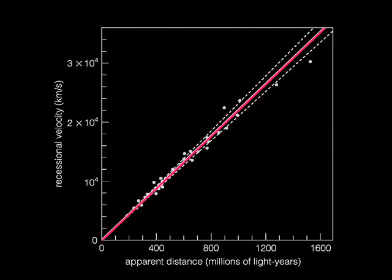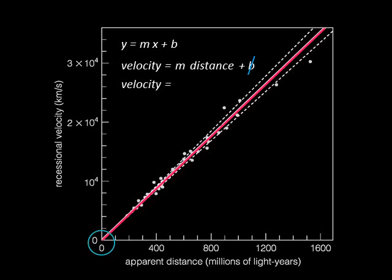This is a newer plot of velocity versus distance. Basically, we have a straight line. You may recall that there is an equation for a line, usually written as y equals mx plus b. The y in this case is velocity, m is our slope, x is distance, and the y-intercept b is zero. Since this is a special plot, we'll give the slope a special name — we'll call it Hubble's constant, H naught. The equation of our line, velocity equals H naught times distance, is known as Hubble's Law.